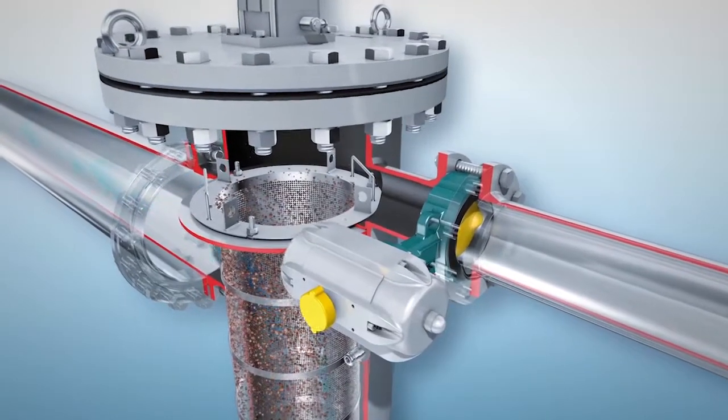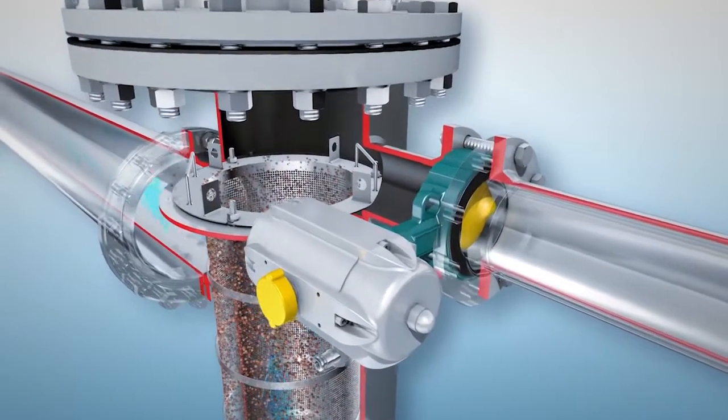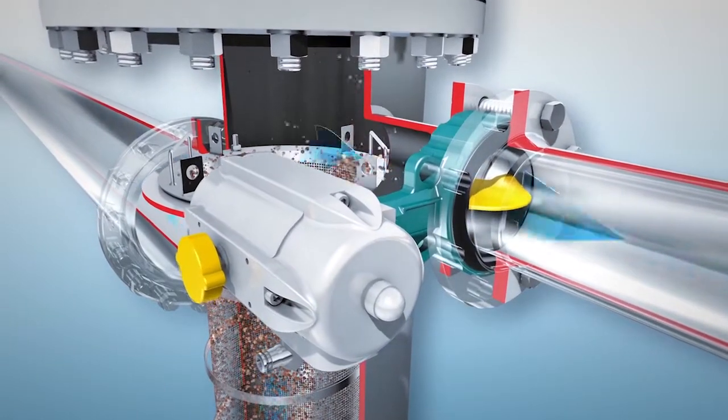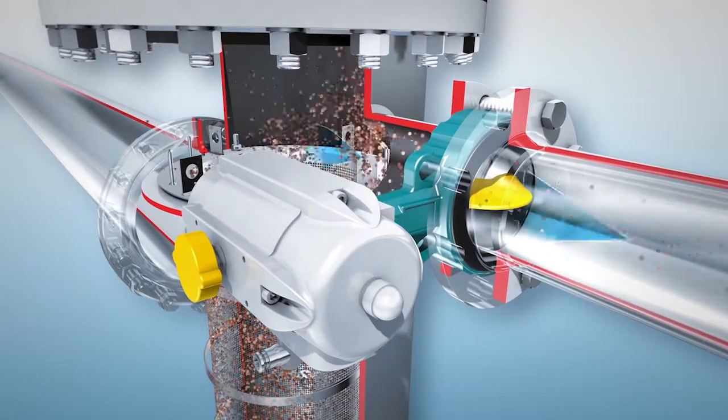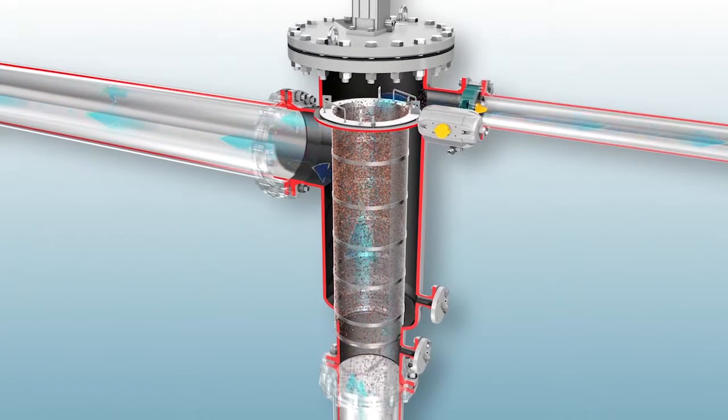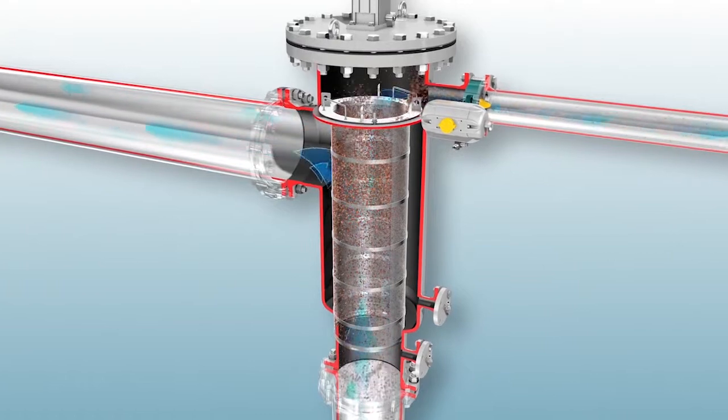Cleaning begins automatically according to a time cycle or after a differential pressure signal by the opening of the back flush valve. After the initial flush, the concentrated cleaning cycle begins when the flushing disc starts its journey down the inside of the filter screen.